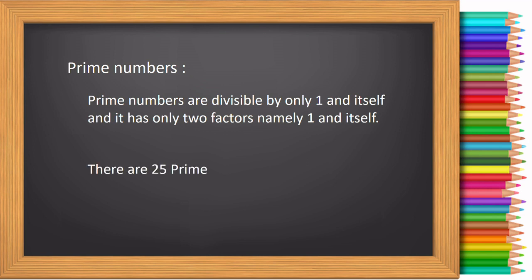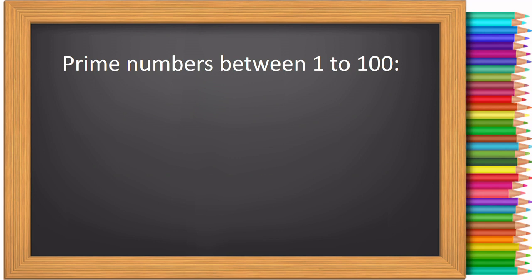There are 25 prime numbers between 1 to 100. Now let us see the prime numbers between 1 to 100.